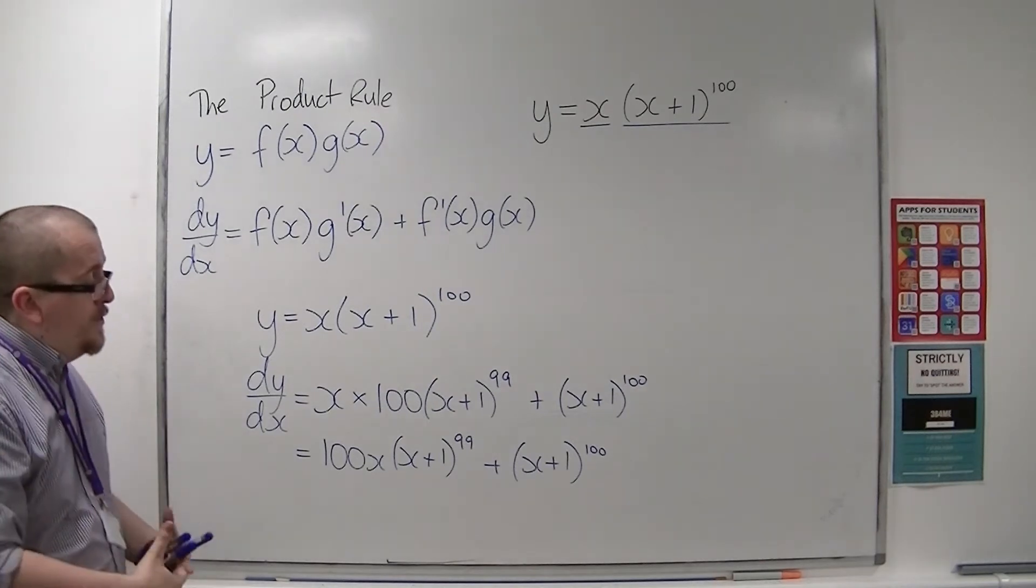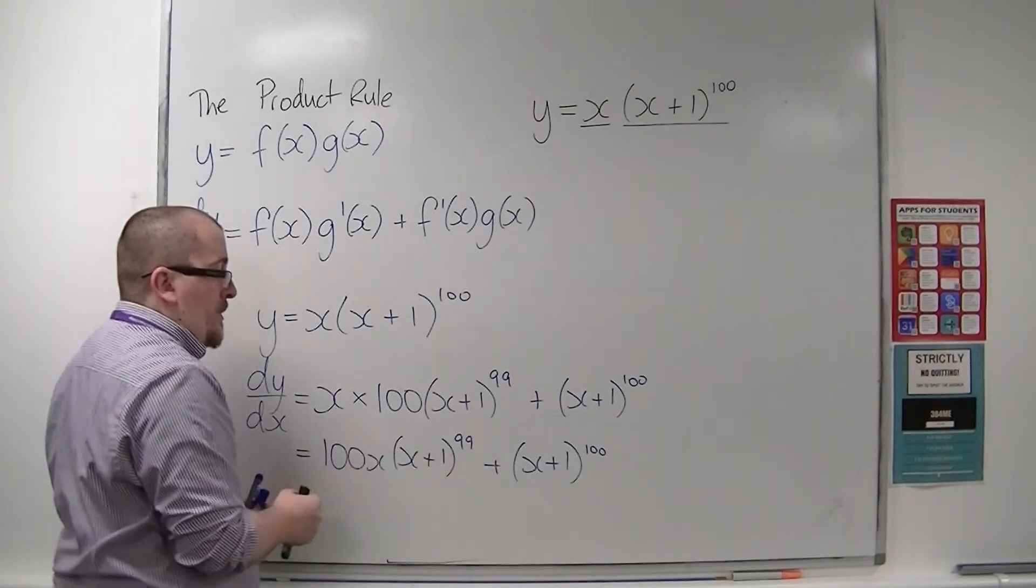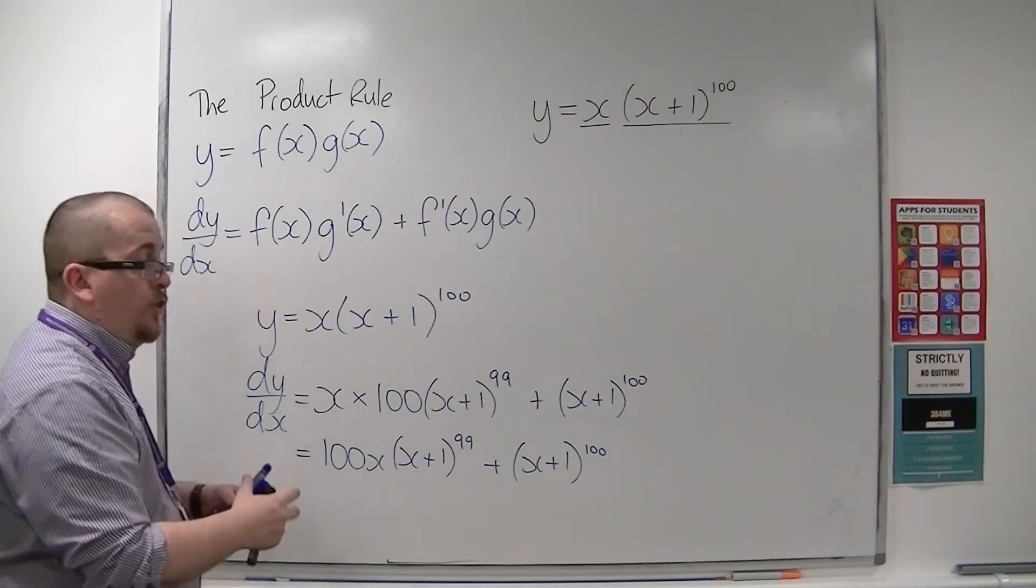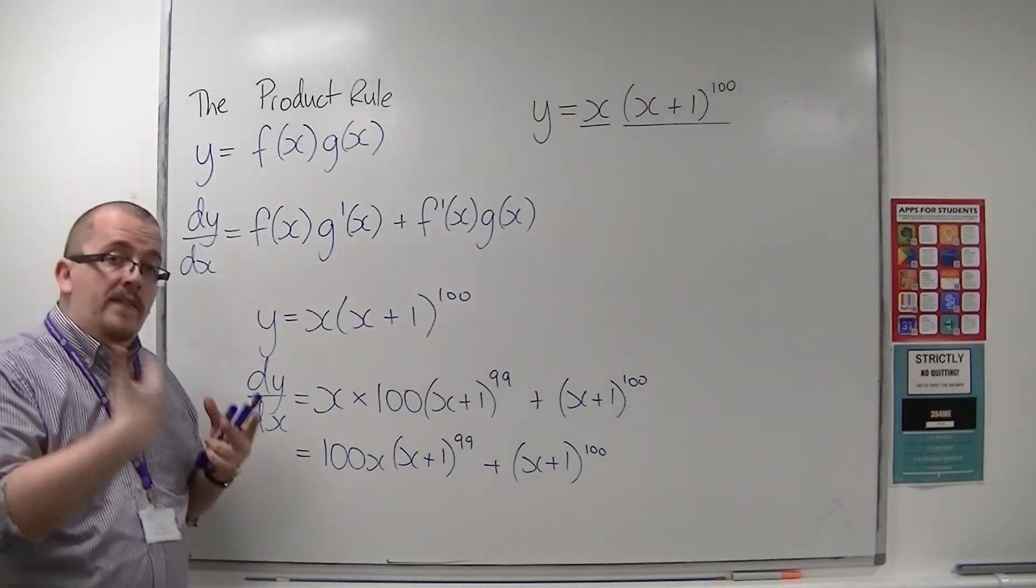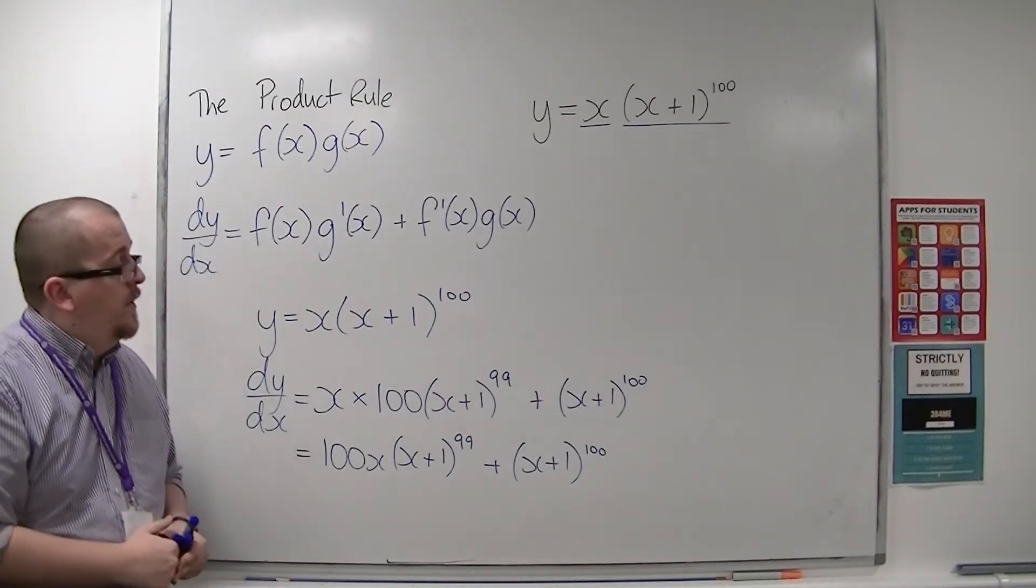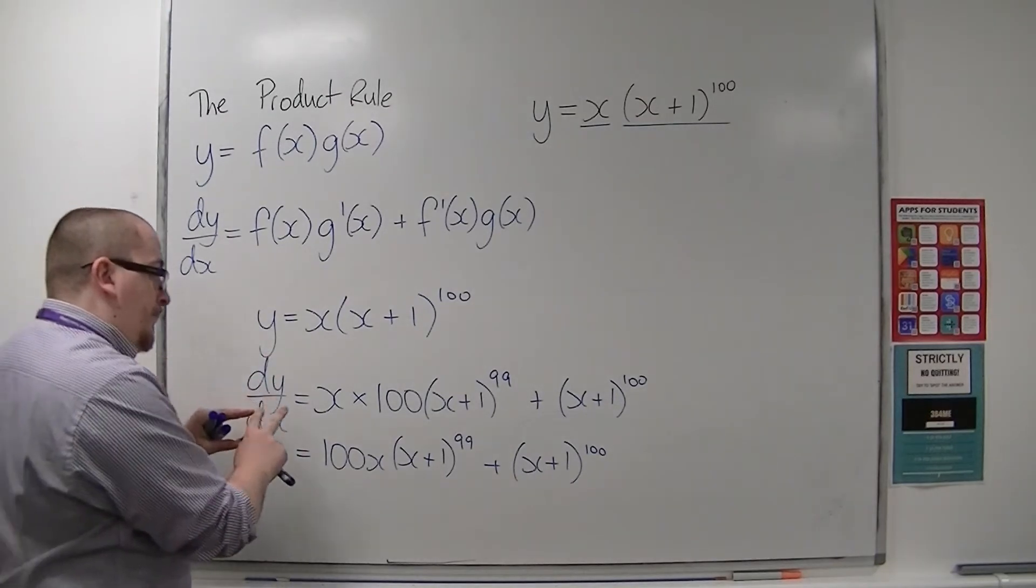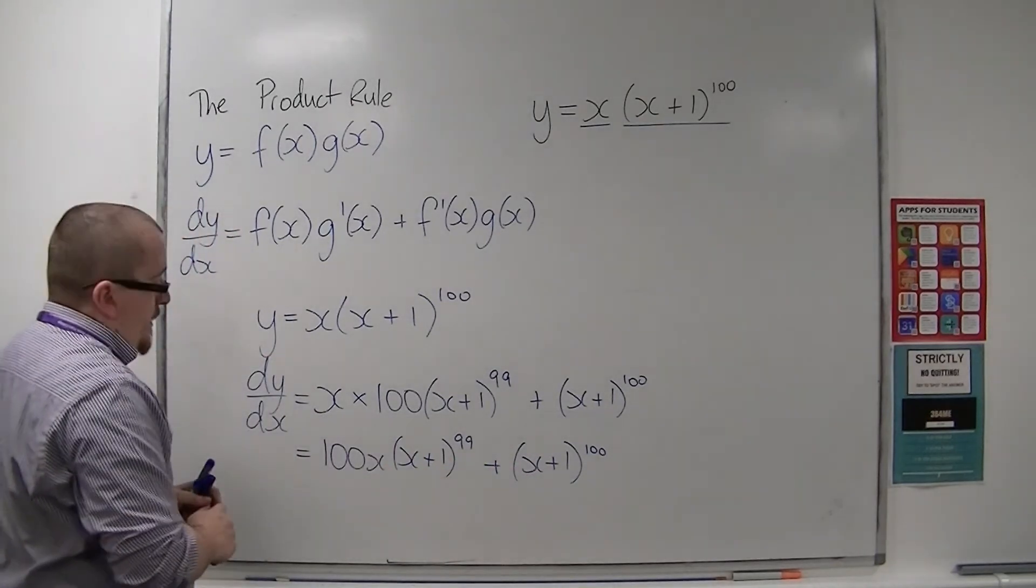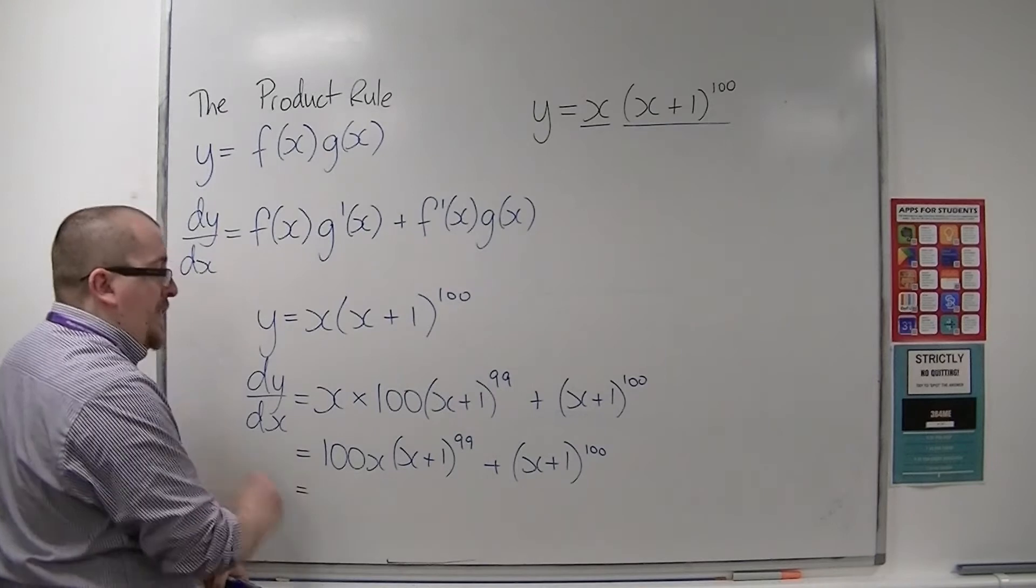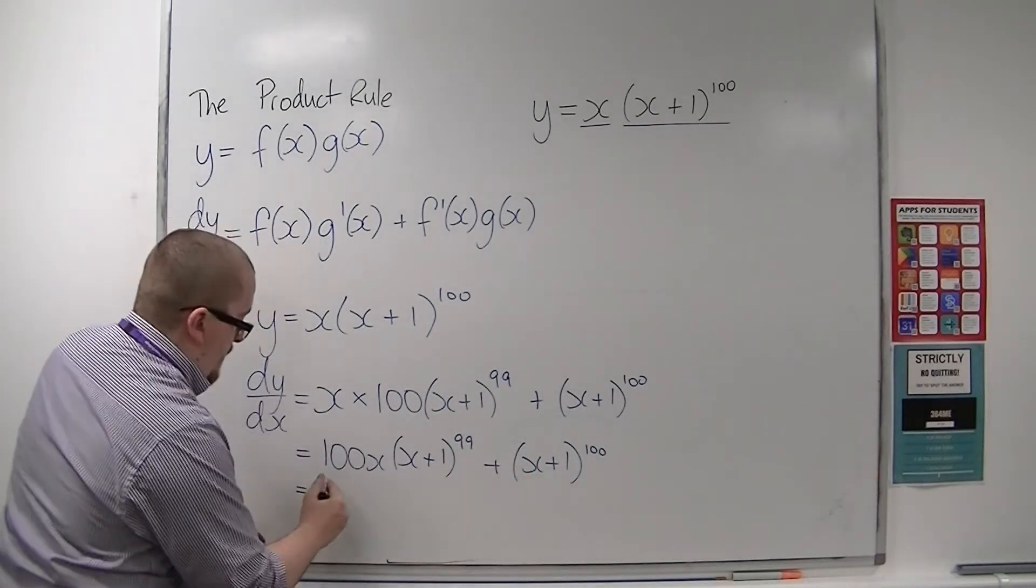Now we could potentially be asked to then factorise that, which we're going to be looking at in the next few videos. If I did that quickly, then you could see that x plus 1 to the 99 is common to both terms.